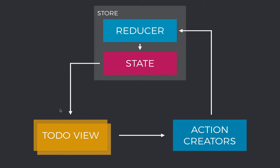Currently, our application is essentially only this to-do view. We are maintaining all the state of the view inside of this one component. When we move to using Redux for managing our state, essentially what's going to happen is that we have one central state. This state will be shared among all the views that we have and will have in the future. The state will be managed by something called a store that we can subscribe to, so the to-do view subscribes to the state, and any time that gets updated, we'll get notified.